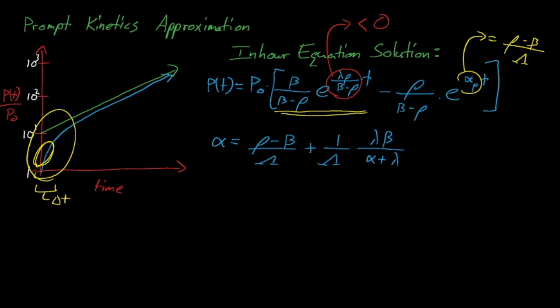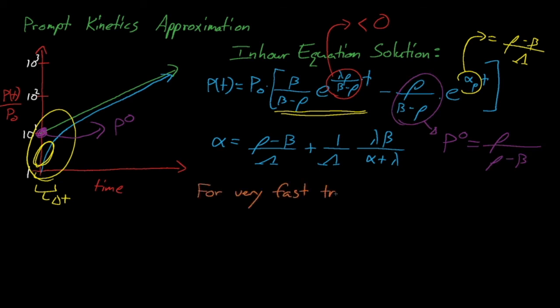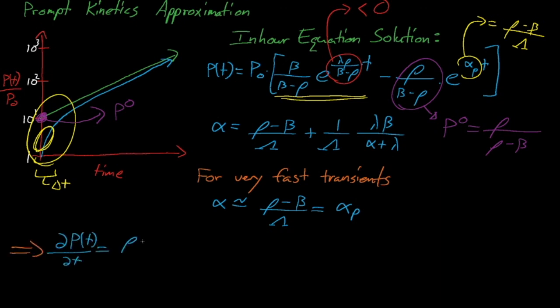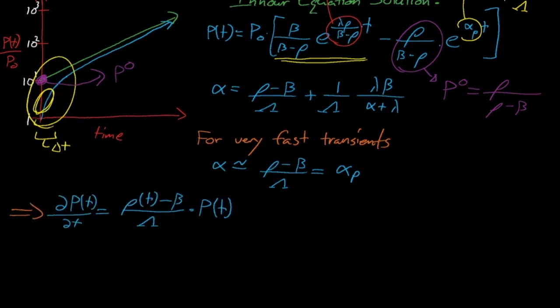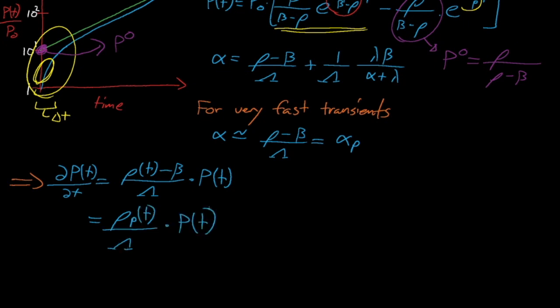So under the prompt kinetics approximation, we can ignore all delayed neutrons in our point kinetics equations, which means that our alpha is simply equal to rho minus beta divided by capital lambda, which is equal to alpha prompt. From here, our power is dictated by this simple differential equation where we can define the amount of prompt reactivity, or rho sub p, as simply equal to rho minus beta. Essentially, this prompt reactivity is how prompt supercritical our system is. We can solve this differential equation for non-constant reactivity insertions such as a ramp insertion, but it quickly becomes increasingly complex, so we'll mostly apply the prompt kinetics approximation to a simple constant step reactivity insertion.